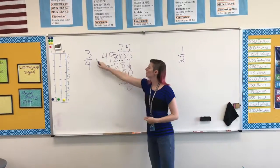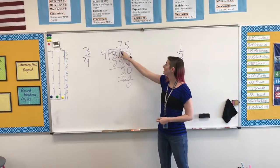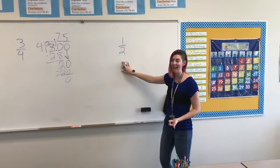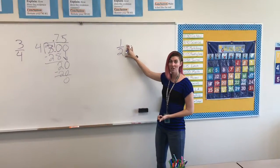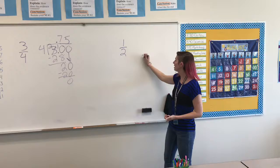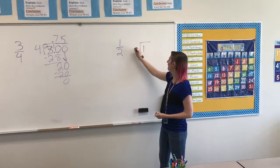So my answer here: 3 fourths is the same as 0.75 or 75 hundredths. We can do this with any fraction, like 1 half. Reading a fraction as a division equation, this would be 1 divided by 2. So we're going to set up 1 divided by 2.